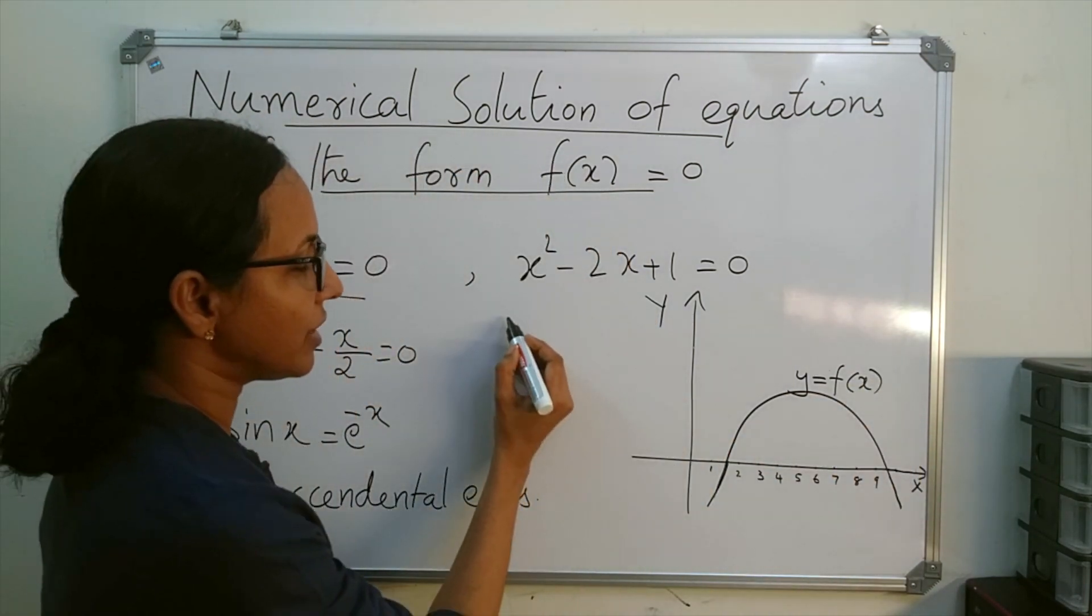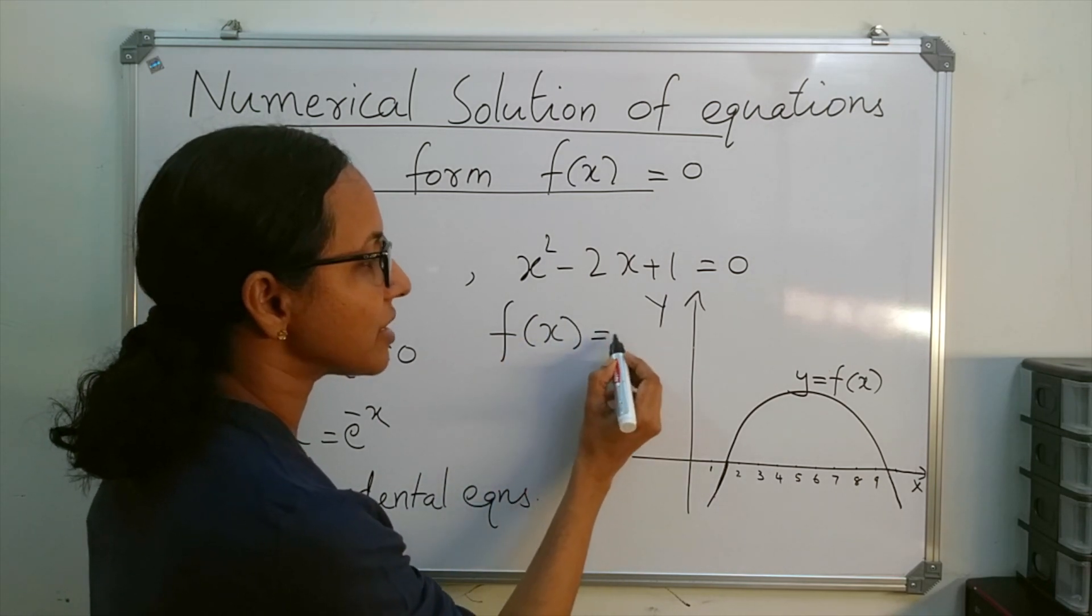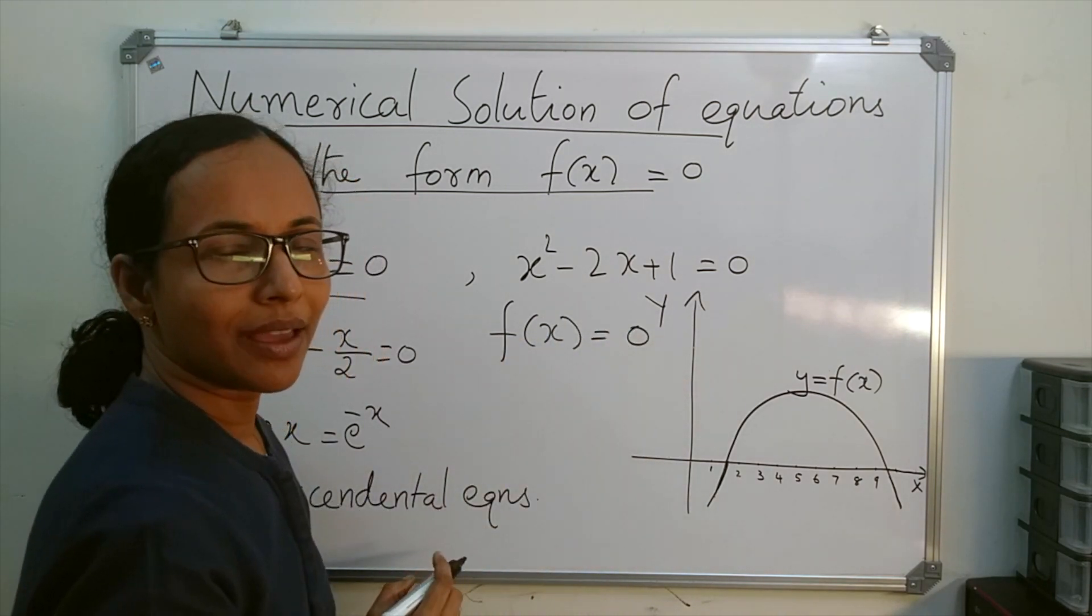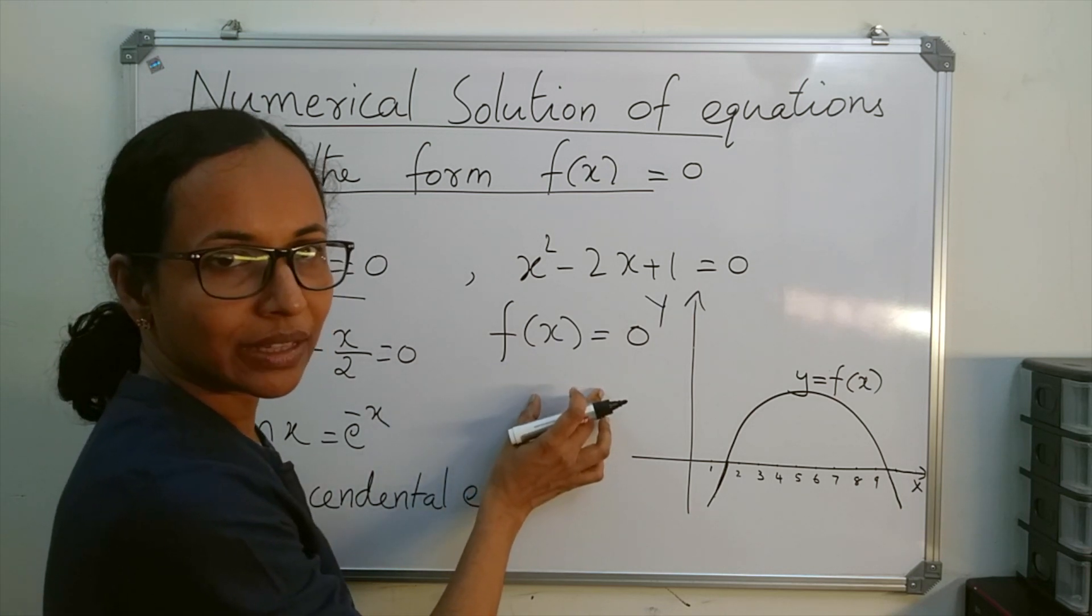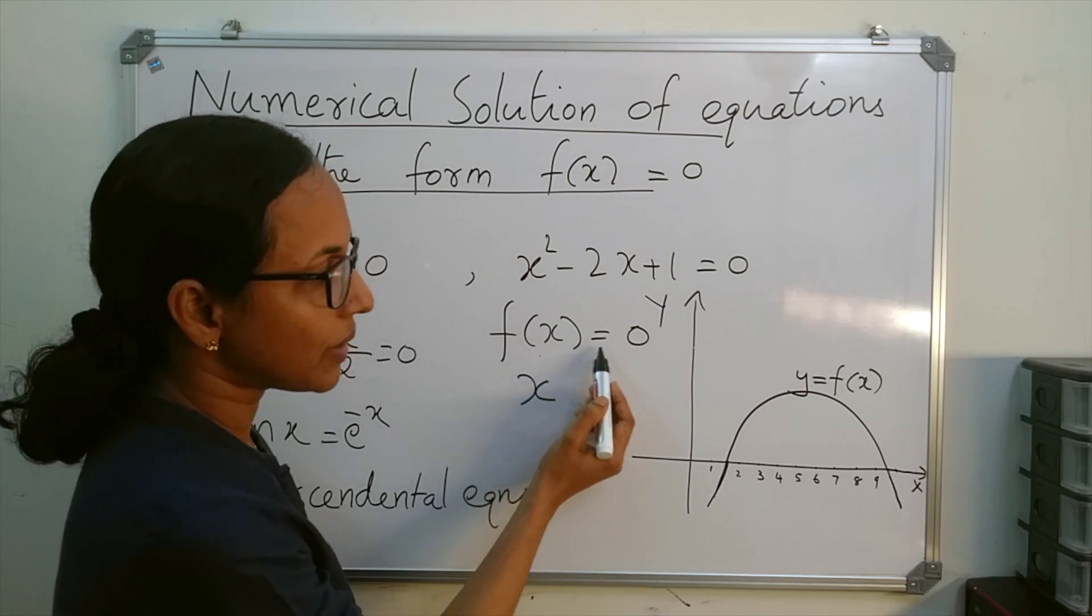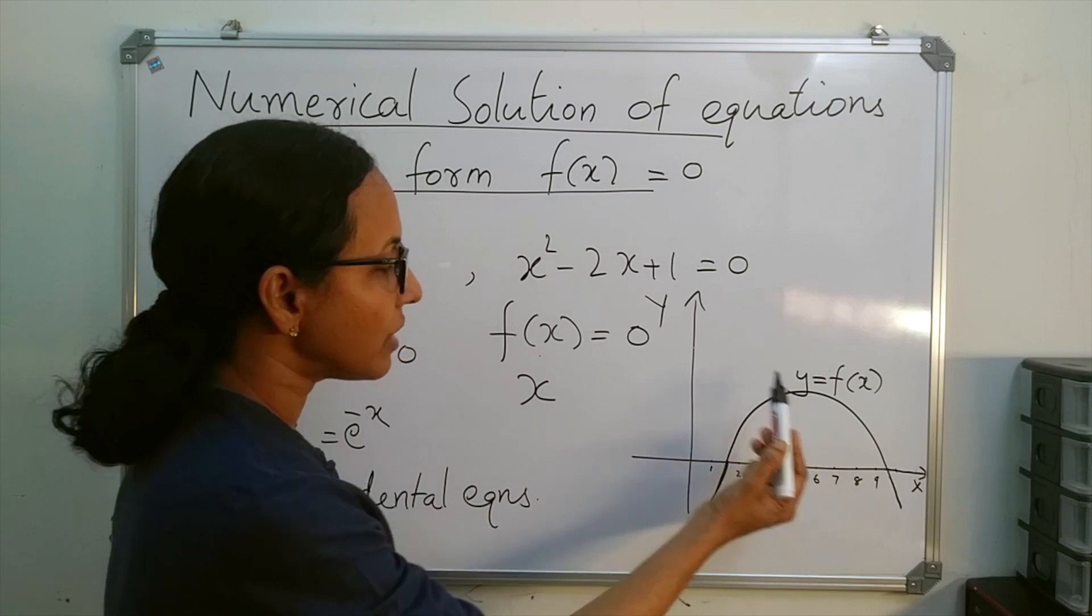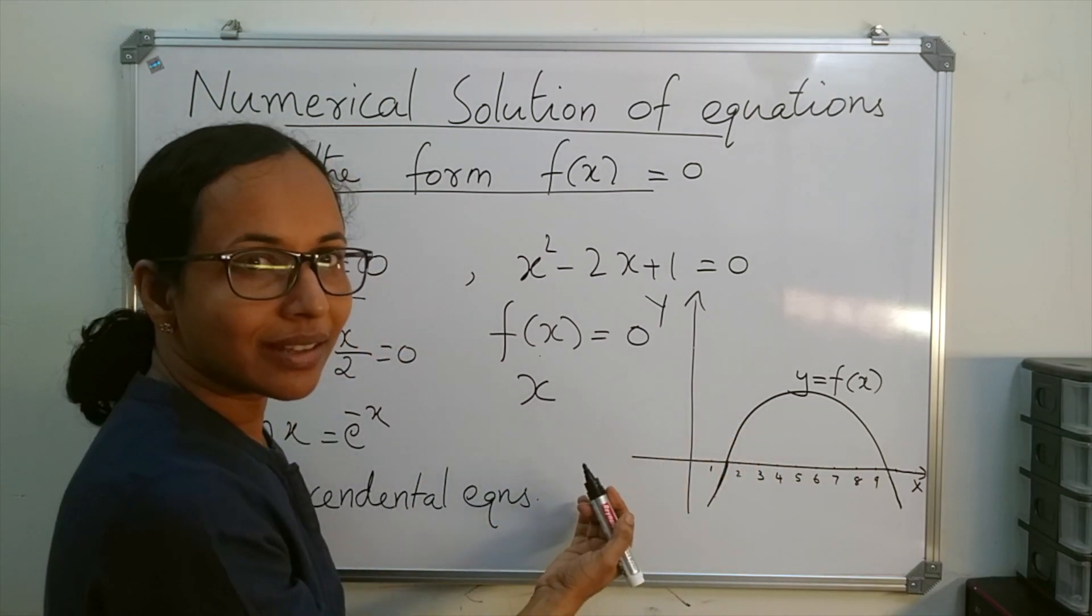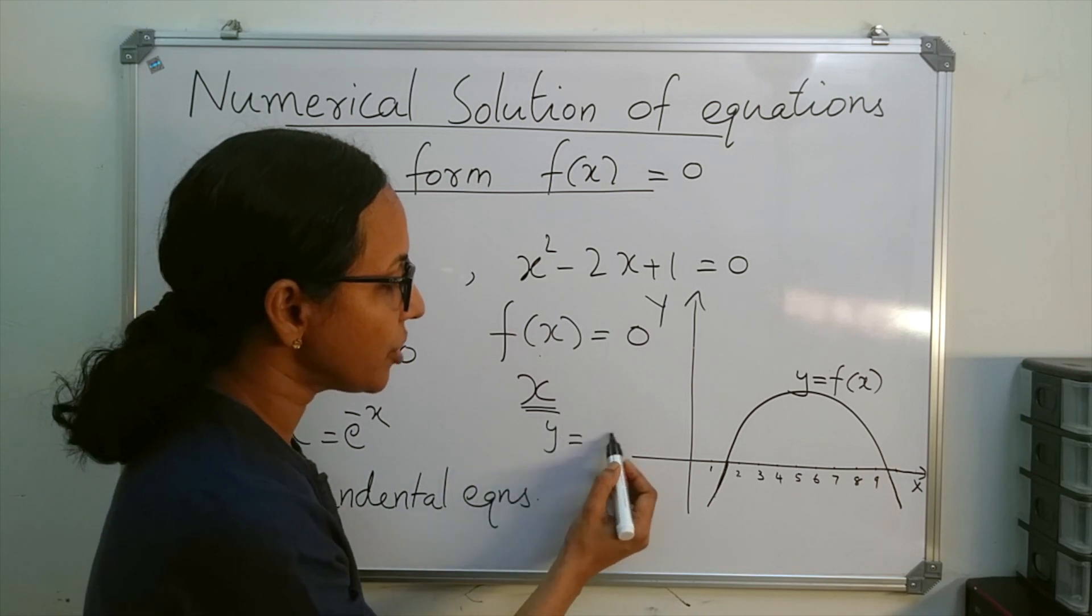Suppose you have to find the solution of the equation f(x) = 0. By finding the solution of f(x) = 0, we mean finding x such that f(x) = 0. Since f(x) is the same as y, the question is finding x such that y = 0.